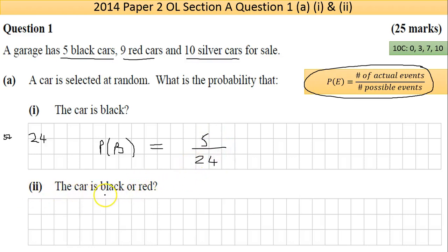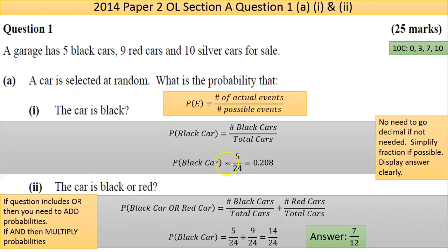Now, the second part there, the car is black or red. The probability, when you see the word OR, that gives you an indication of what you have to do with the probabilities. And OR means add. So you add your probabilities. The other option is if it said the car is black and red. Actually, that probably wouldn't make sense in the scenario, but you'd multiply the probabilities. I'll go to the answer on the next page, because I have it written out properly.